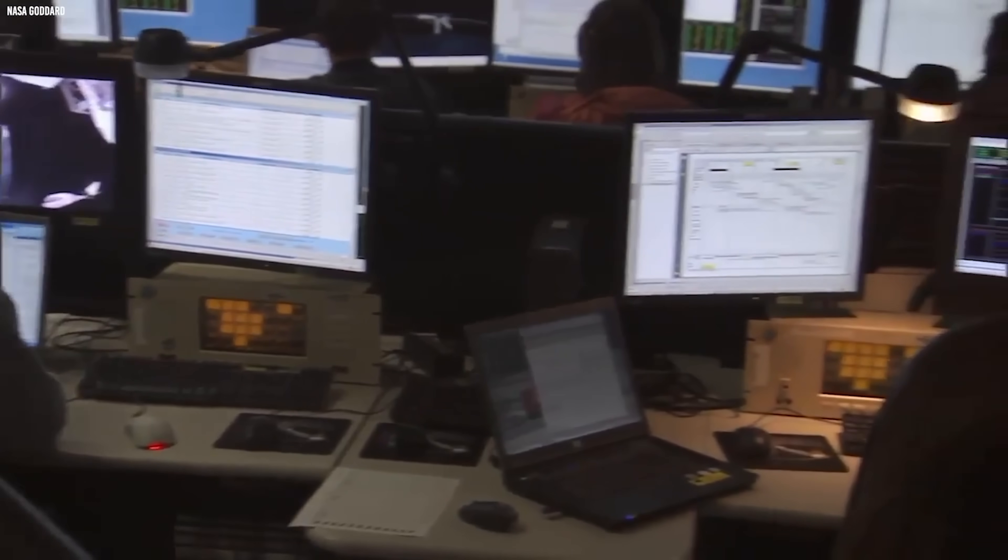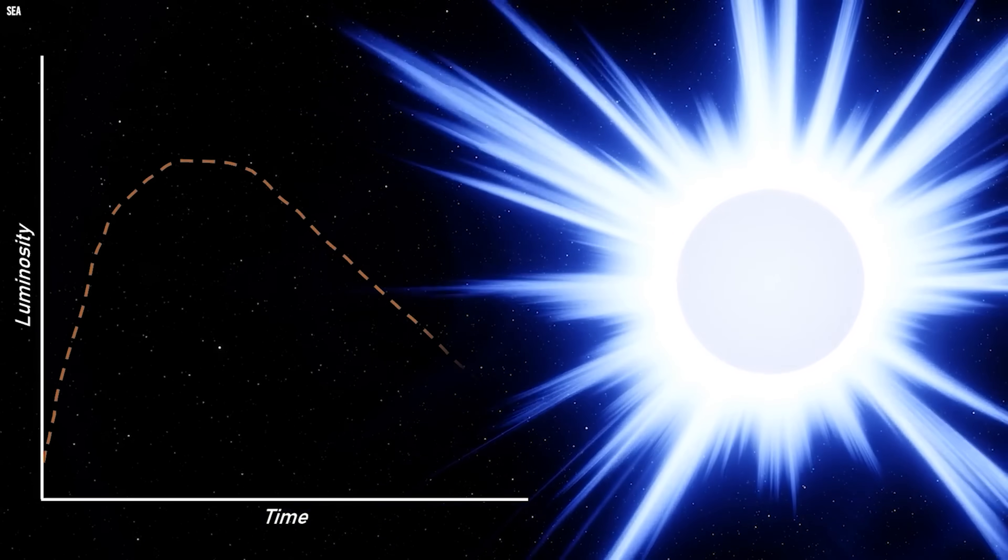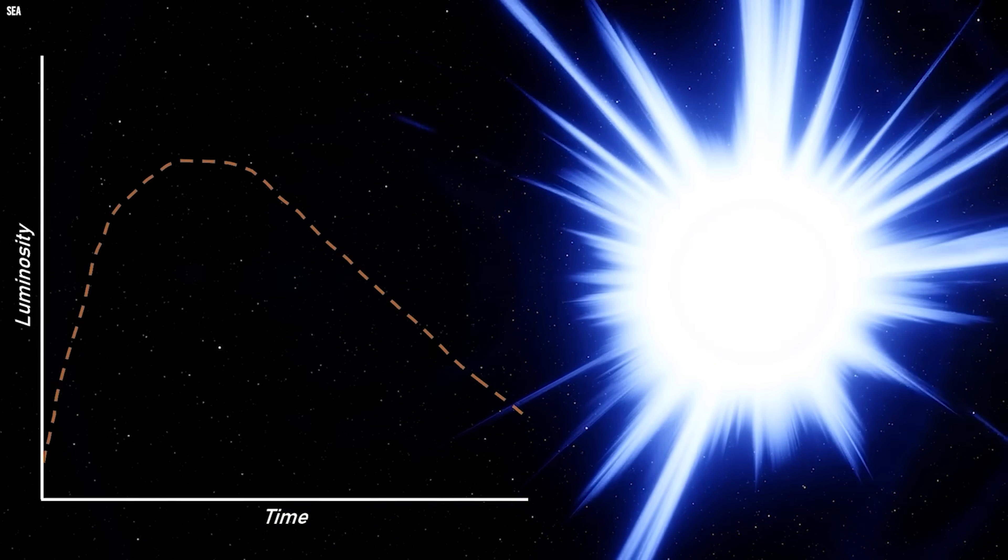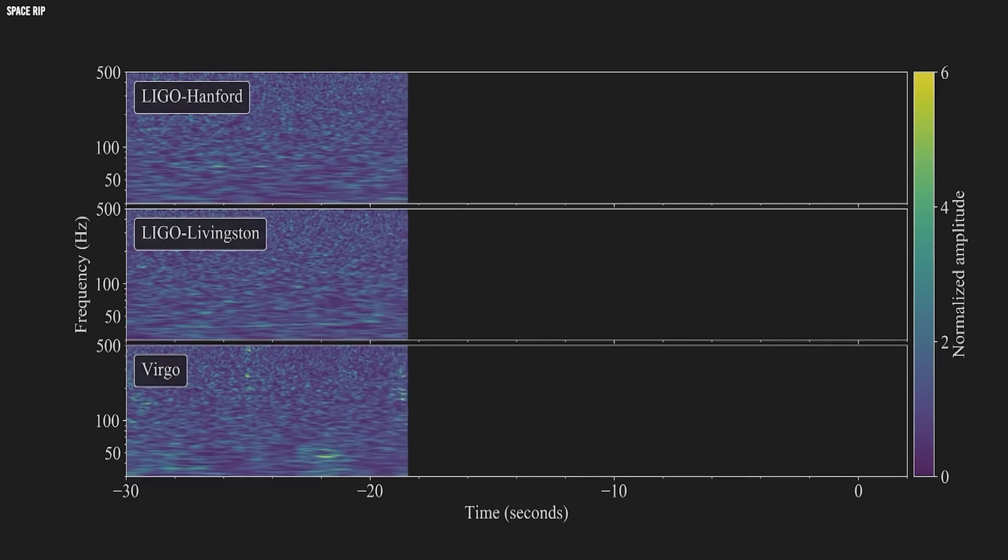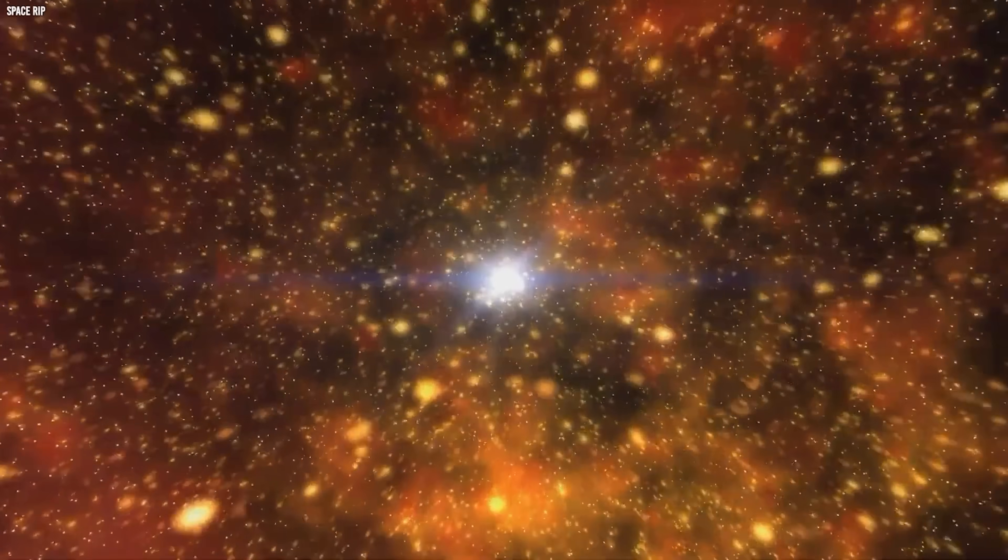For now, astronomers are watching intently. Subtle shifts in spectral lines, tiny changes in orbital motion, each new signal tightens the predictions and sharpens understanding of what will ultimately pull the trigger.